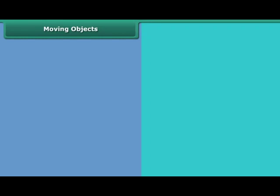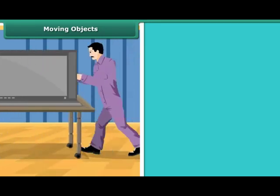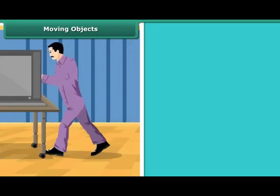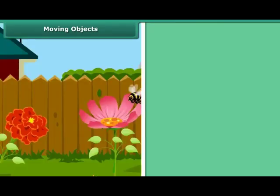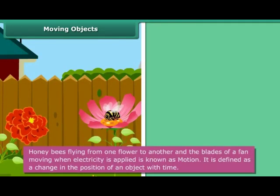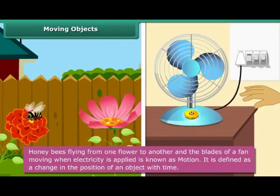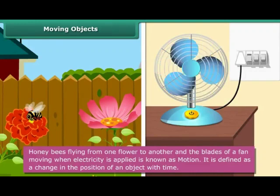Moving Objects. You will notice that there are objects that move when you apply force or are moving on their own. For example, you will see honeybees flying from one flower to another. So also, you will notice that the blades of a fan move when electricity is applied.